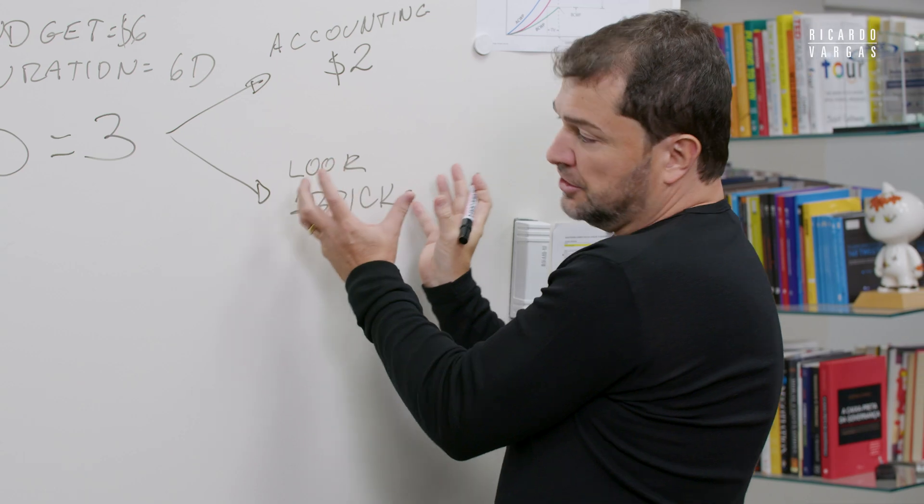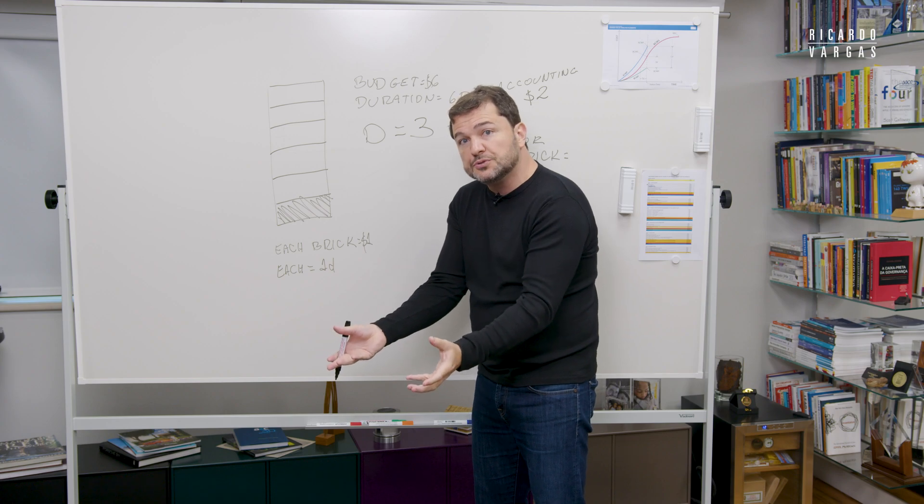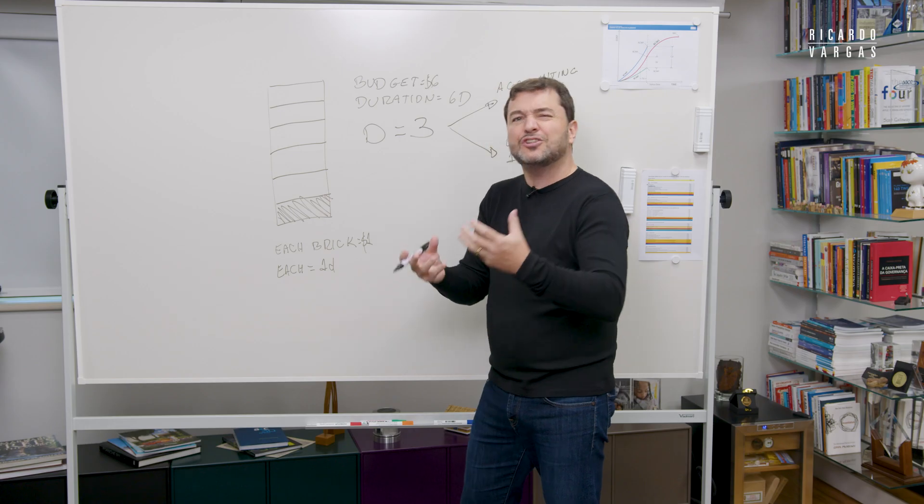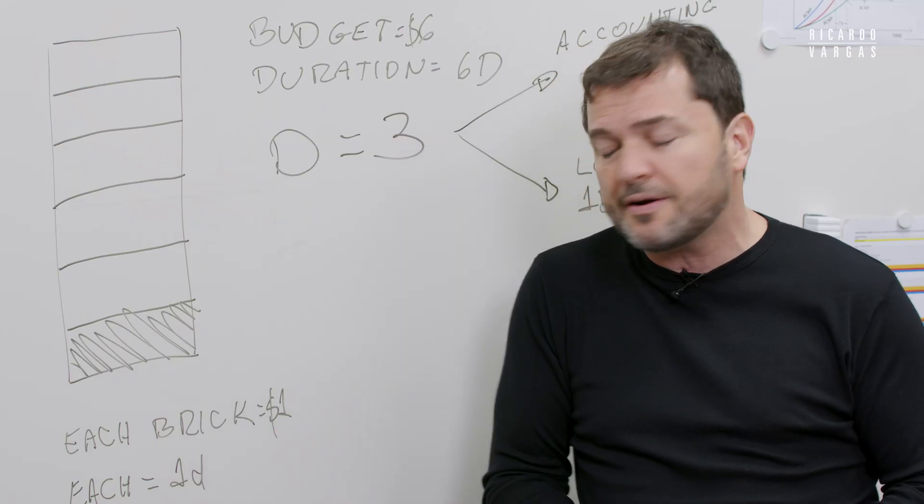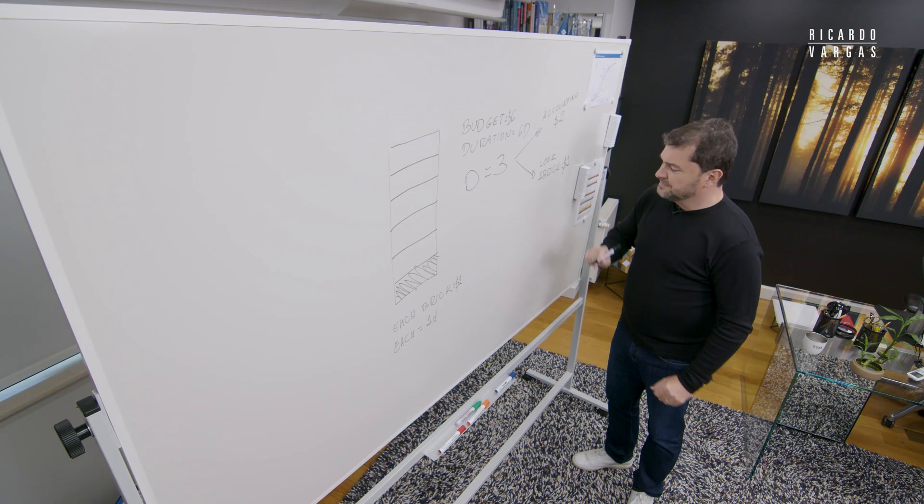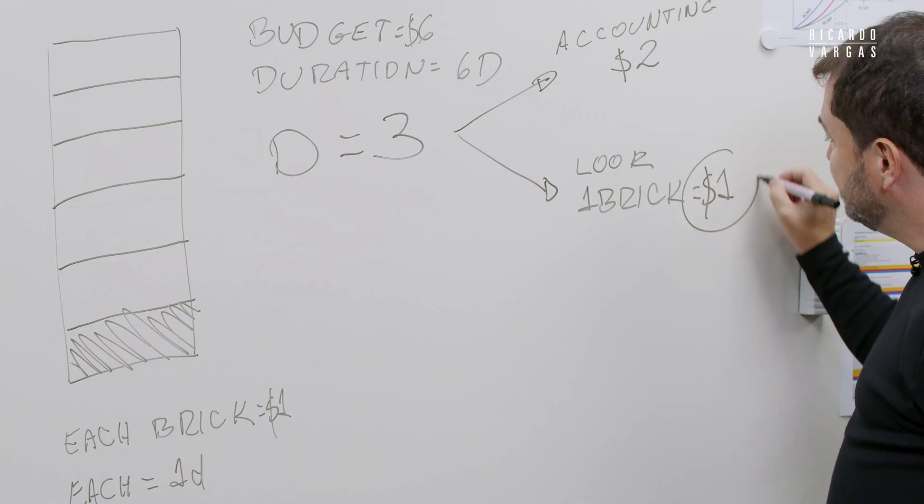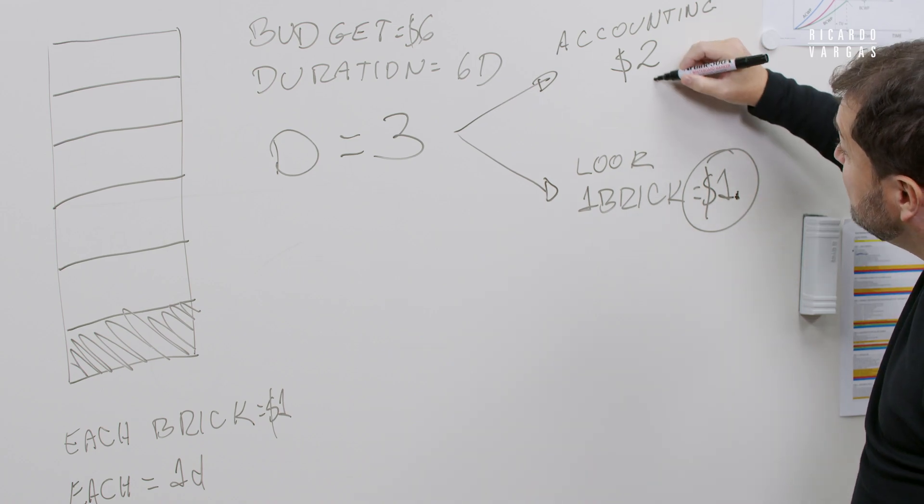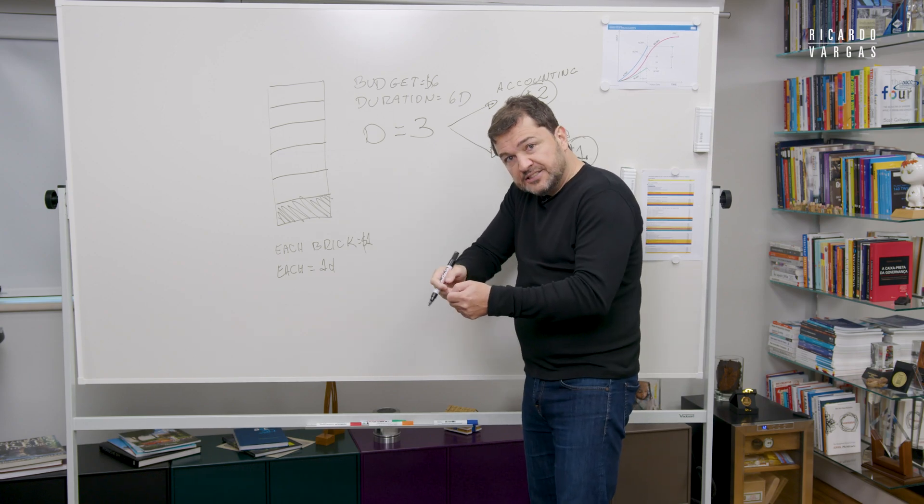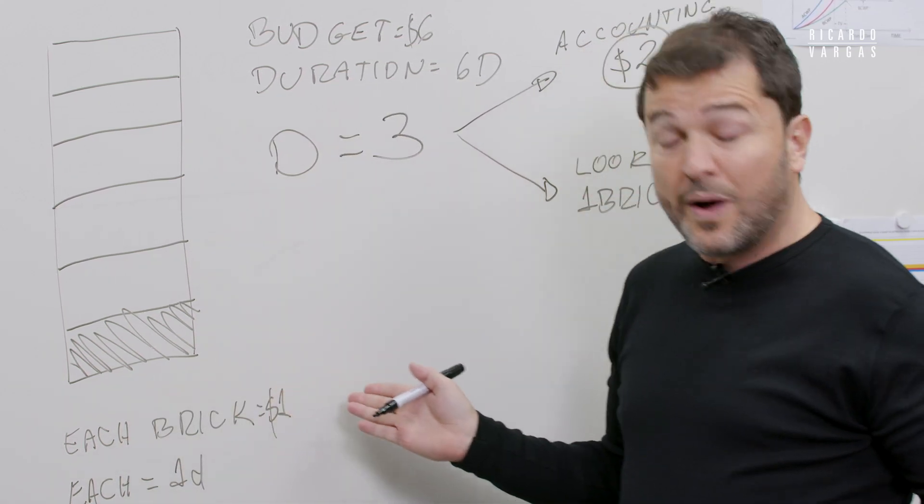This means what you earned. You earned one brick, because this is the physical result of what you produced. And how much is this one brick worth? Not in market terms, but in terms of your budget. It's worth $1. It means you earned $1. Look how crazy. You earned $1, but to earn $1 you spent $2. It means you opened your wallet, took out $2 to produce something that is only worth $1, because it's just one brick.